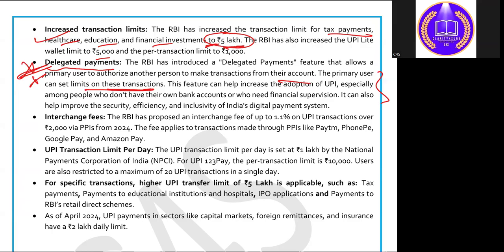Regarding UPI transaction per-limit updates: the limit has been raised to 10,000. In April 2024, UPI payment in sectors like capital markets, foreign remittances, and insurance carry a two-lakh daily limit. You can keep these points in mind while answering descriptive questions.